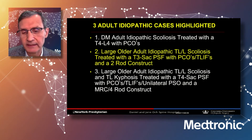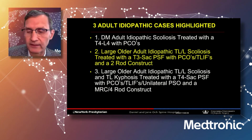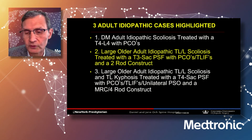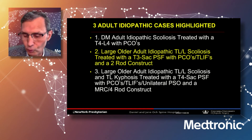The second case is a larger, older adult idiopathic thoracolumbar scoliosis treated with a T3 to sacrum posterior spinal fusion with posterior column osteotomies, TLIFs, and a two-rod construct.